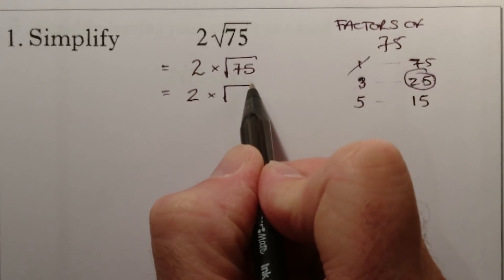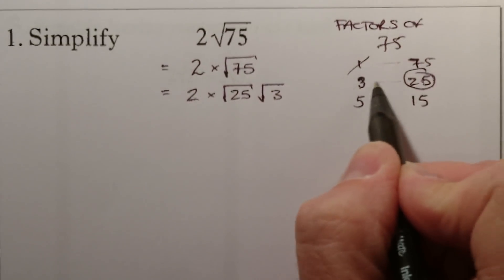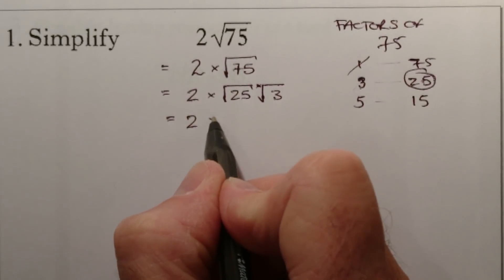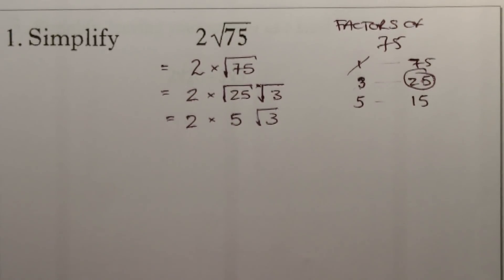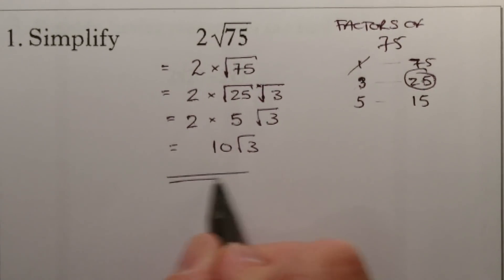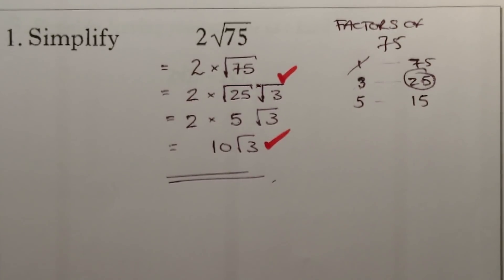So I've got 2, and I'll write the square number first: square root of 25 times root 3. I know that root 25 is 5, and that multiplies by root 3. The simple way is to just multiply the numbers together, giving me 10 root 3. I can't simplify root 3 any further — that's my final answer. I'll give 1 mark for splitting 75 into root 25 and root 3, and 1 mark for the final answer 10 root 3.